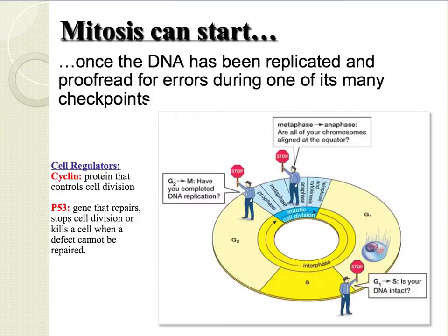Mitosis can only start once the DNA has been replicated and proofread for errors during one of its many checkpoints. Some of the cell regulators include cyclin, which is a protein that controls cell division, and p53. p53 is a gene that repairs, stops cell division, or kills a cell when a defect cannot be repaired.